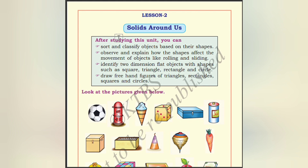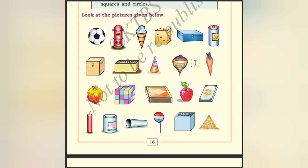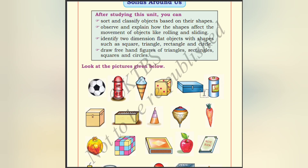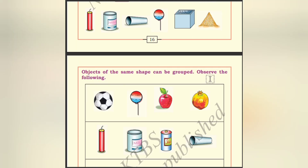You can explain how the shapes affect the movement of objects, like rolling and sliding. Identify two-dimensional flat objects with shapes such as square, triangle, rectangle, and circle. Draw freehand figures of triangles and circles. Look at the pictures given here — we have to draw the freehand figures of triangle, rectangle, square, and circles.